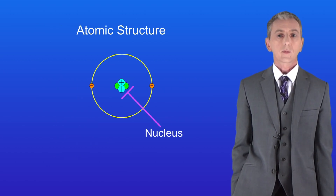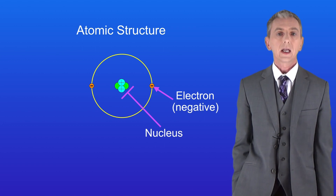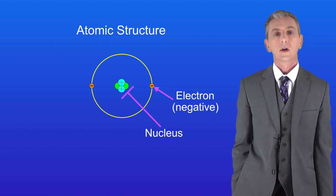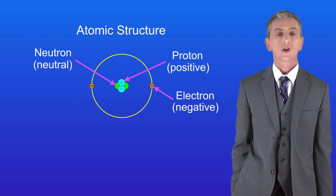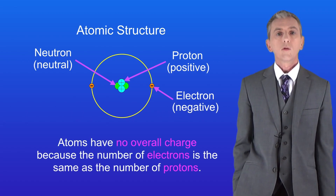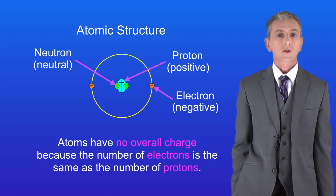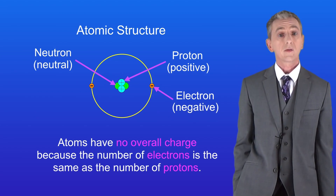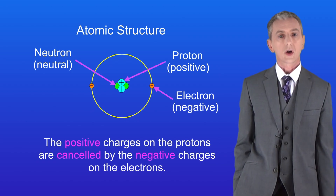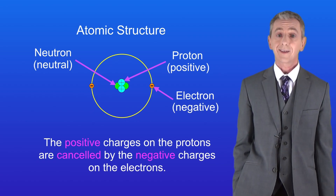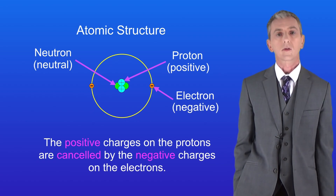We've already seen that atoms contain a central nucleus surrounded by electrons. Electrons have a negative charge. In the nucleus we find protons with a positive charge and neutrons which are neutral. Remember that atoms have got no overall charge because the number of electrons is the same as the number of protons. This means that the positive charges on the protons are cancelled by the negative charges on the electrons.